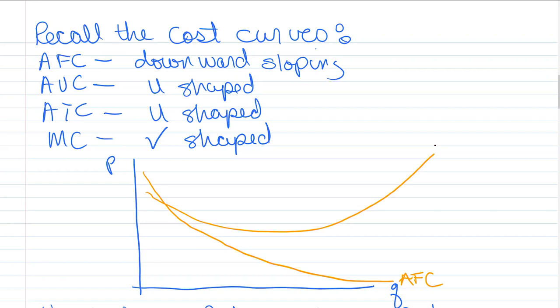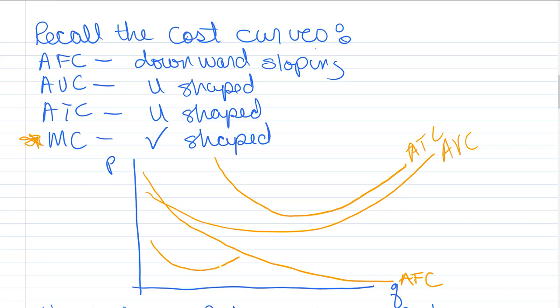We have average variable costs, which is U-shaped — it declines and then increases. And then we have average total costs that first looks like average fixed costs and then takes the shape of average variable costs because they become more important. And then most importantly, we have the marginal cost curve, which has a very precise relationship to average variable and average total — it intersects them at their minimum point. This was what we called the marginal average rule.